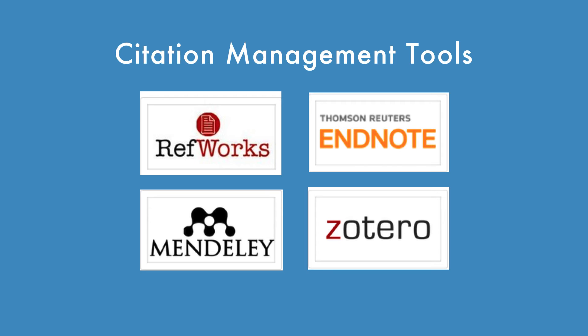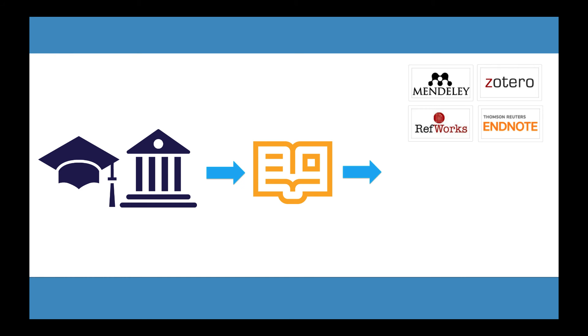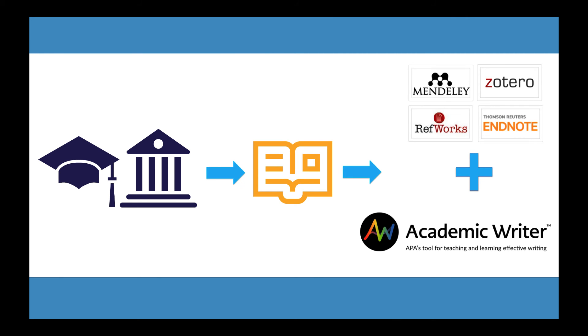If you're writing a literature review and need to cite a large number of articles, or if you want a convenient place to store citations while you're conducting your research, you may want to consider using a citation management tool like RoughWorks, EndNote, Mendeley, or Zotero. If you're affiliated with a college or university, ask one of your librarians what's used on your campus. Many schools provide access and training for one or several citation management tools, or may even provide access to APA's Academic Writer, a tool dedicated to citing and writing according to APA-style guidelines.